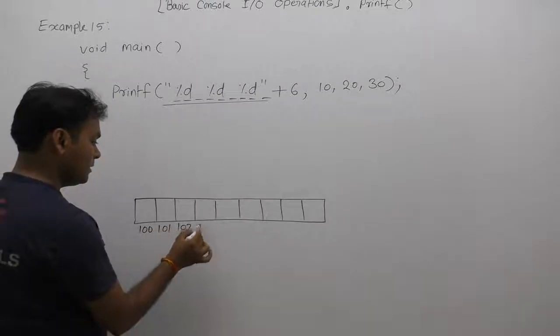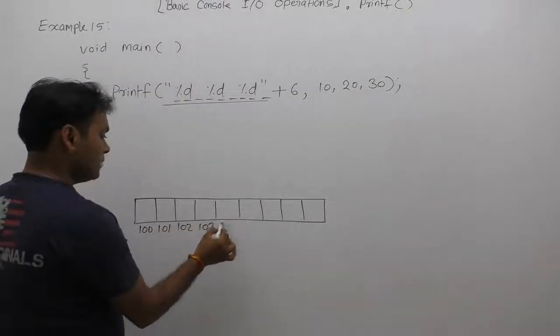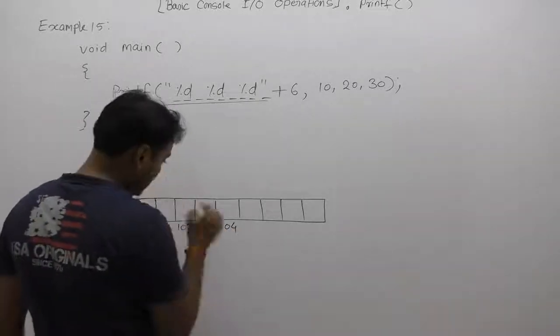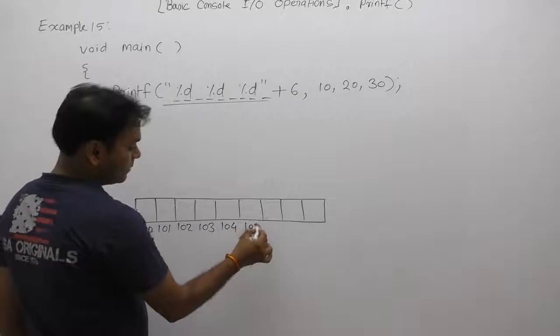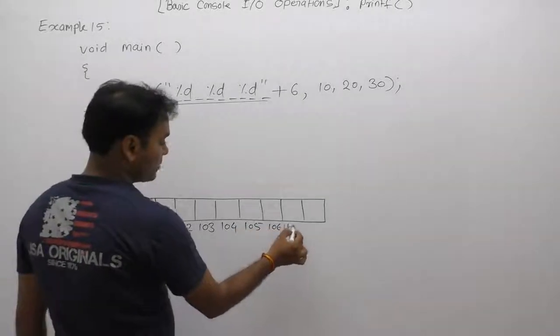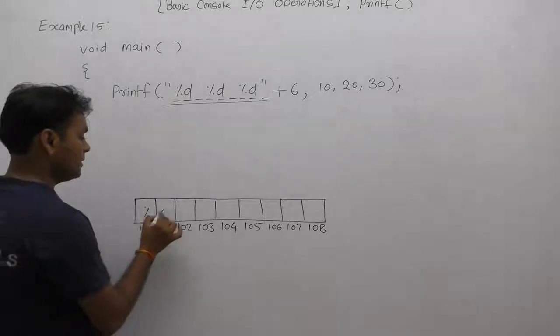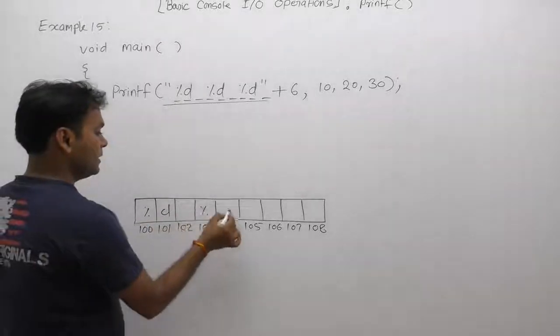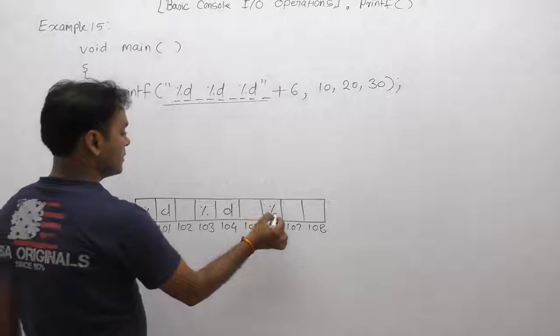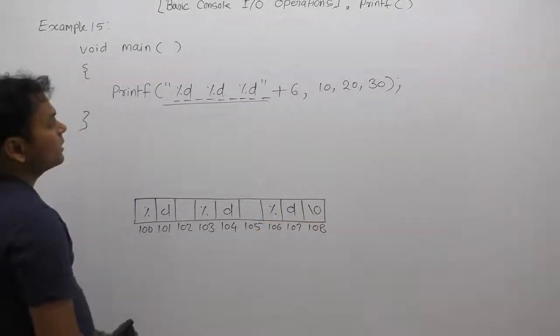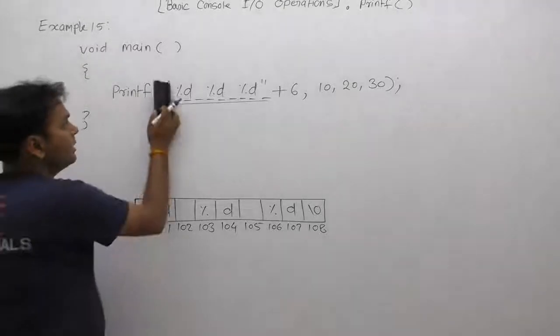Therefore we are able to guess the remaining addresses: 105, 106, 107, and 108. Finally, %d space %d space %d and null. Again we are replacing its base address, which is 100, in place of that format string.